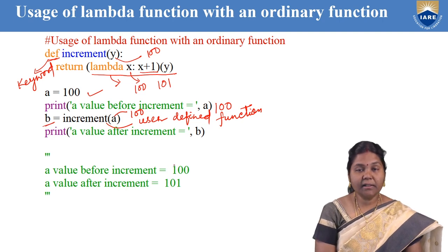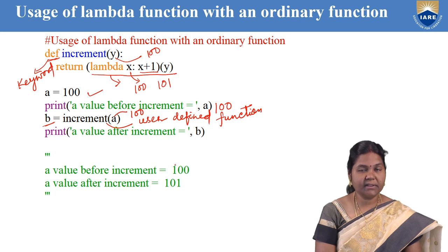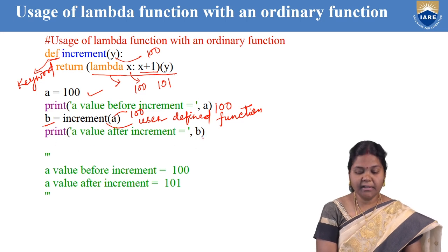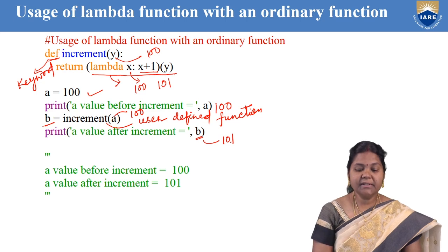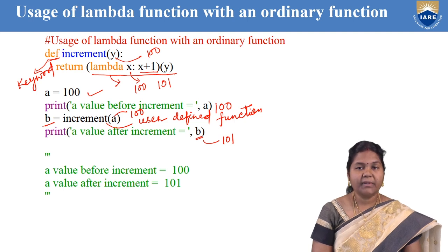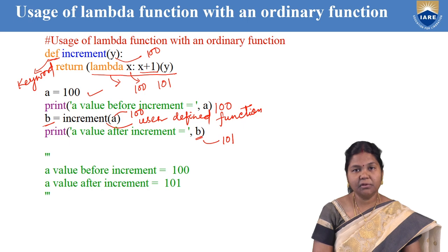b will contain the return value from the expression. Here our expression is the lambda function, so the lambda function returns 101, which is assigned to b. After the increment, we are printing the value of b, so you will get 101. With this example, you can understand that a lambda function can be used in the return statement of a normal user-defined function.